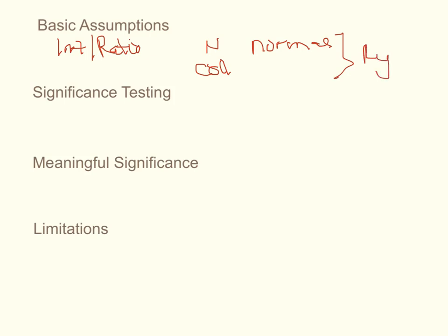In terms of significance testing in correlation, we have just one test: is the p-value for r less than 0.05?